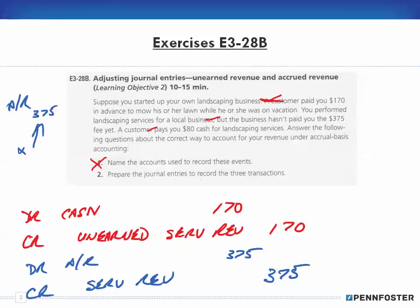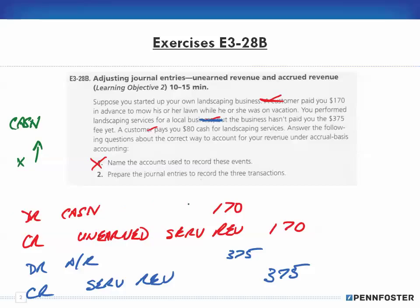The third transaction: a customer pays you $80 cash for landscaping services. Am I affecting cash? Yes — you're receiving $80, so cash increases. Just like the first transaction, debit Cash $80 because cash increases. Since debits must equal credits, you credit something else. You're performing the service, so you record that revenue — credit Service Revenue $80. That's your third journal entry.